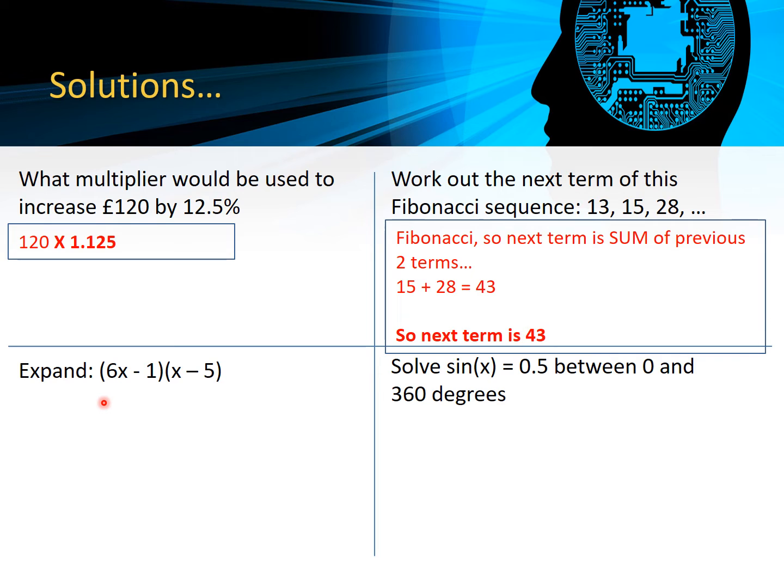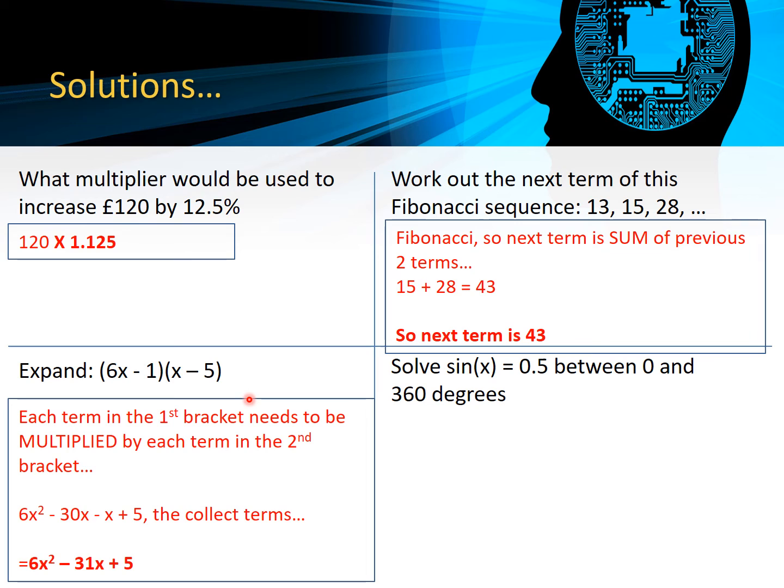Expanding a pair of brackets: (6x - 1)(x - 5). As long as you make sure that each term in the first bracket is multiplied by each term in the second, you can use a grid if your teacher is showing you that way. I still use FOIL, but fundamentally everything needs to be multiplied by everything else.